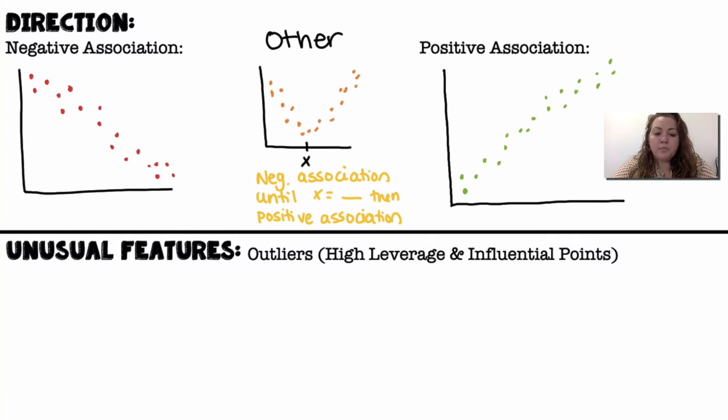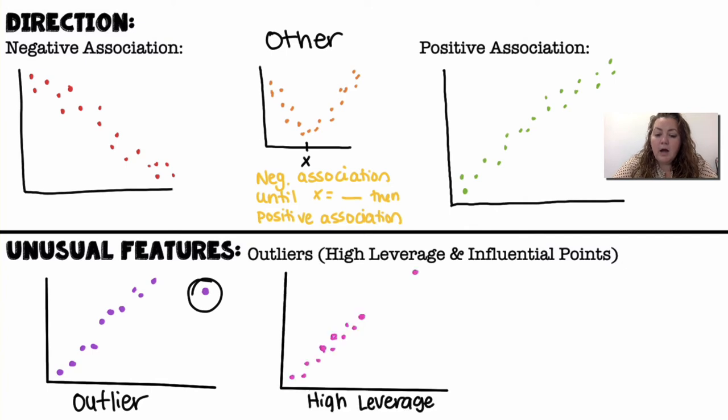Unusual features. It could be outliers, high leverage points, and influential points. So, an outlier could just be a point that doesn't really fit with the other data. A high leverage point, it does fit with the data, but it's much further out on the x-axis. Those actually help to strengthen that relationship.